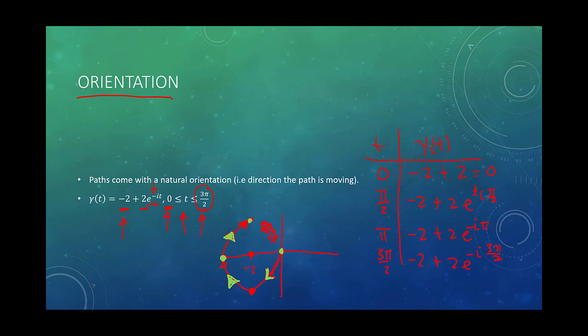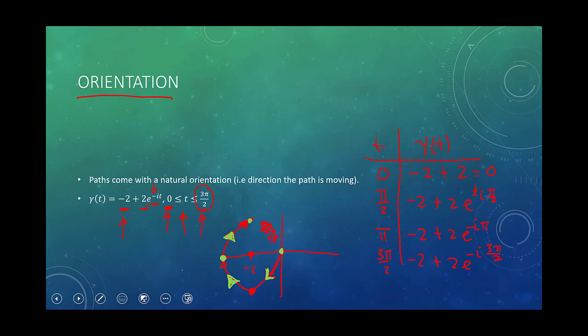To summarize: orientation is just the direction the path is moving — as time proceeds, where is your path going, how is it flowing? That's it for chapter one. We're going to start chapter two and get into the calculus of complex functions — continuity, differentiability, which is really fascinating in the complex setting.